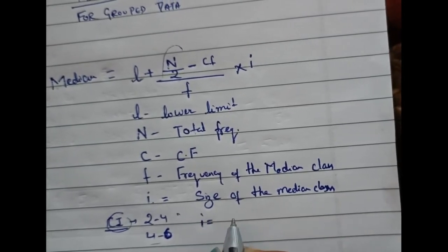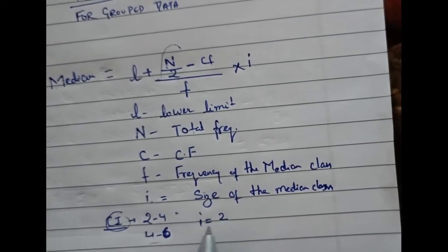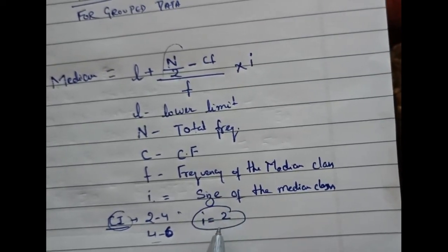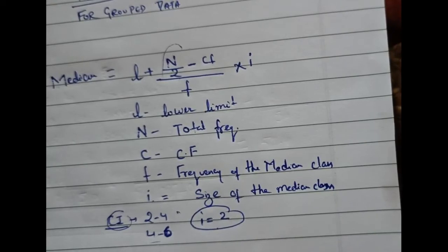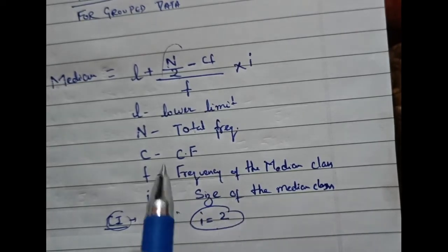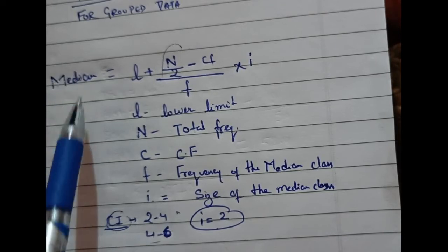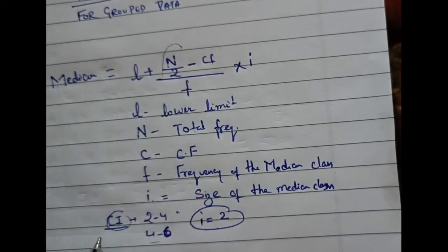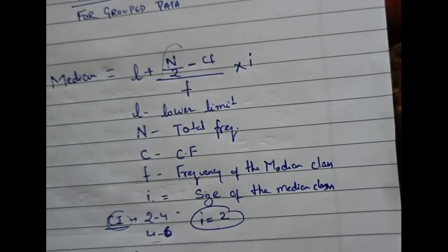4 minus 2, 2 to 4—the I would be 2 if such a question is given. We'll be discussing a question regarding this formula in the next lecture. But for now, let's just understand how this formula is and what different symbols from this formula represent, so that it would be easier for you to understand our next lecture.